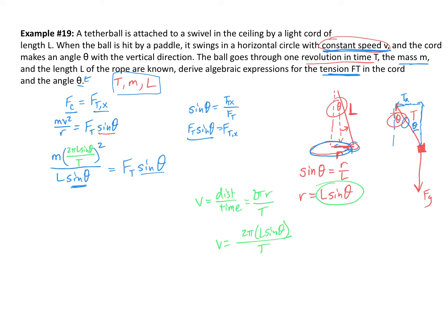From here we can start simplification. I'll square everything inside the squared term, and move T to the bottom of the fraction. So I have m times 4π²L² sine²(theta) on top, and L sine(theta) times T² on the bottom, all equal to F_T sine(theta). At this point we can cancel one of the sine terms — sine squared becomes sine — and cancel one of the L's — L squared becomes L.